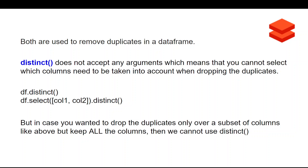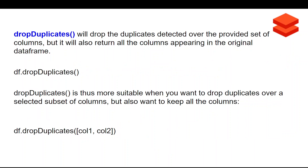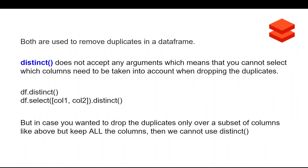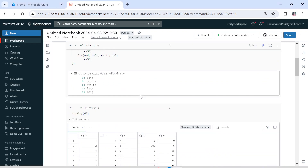If you want to drop duplicates only over a subset of columns but keep all the columns, you cannot use distinct. In that case you will use drop_duplicates. Drop_duplicates will drop the duplicates detected over the provided set of columns but it will also return all the columns appearing in the original data frame. Drop_duplicates is more suitable when you want to drop duplicates over a selected subset of columns while keeping all other columns. Inside drop_duplicates you can put in the list of columns based on which you want to drop the duplicate. Essentially, drop_duplicates takes an argument whereas distinct does not.